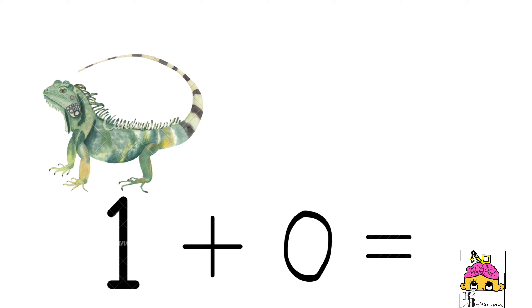We have one iguana but nothing on the other side. So 1 plus 0 equals what? 1 plus 0 equals 1.